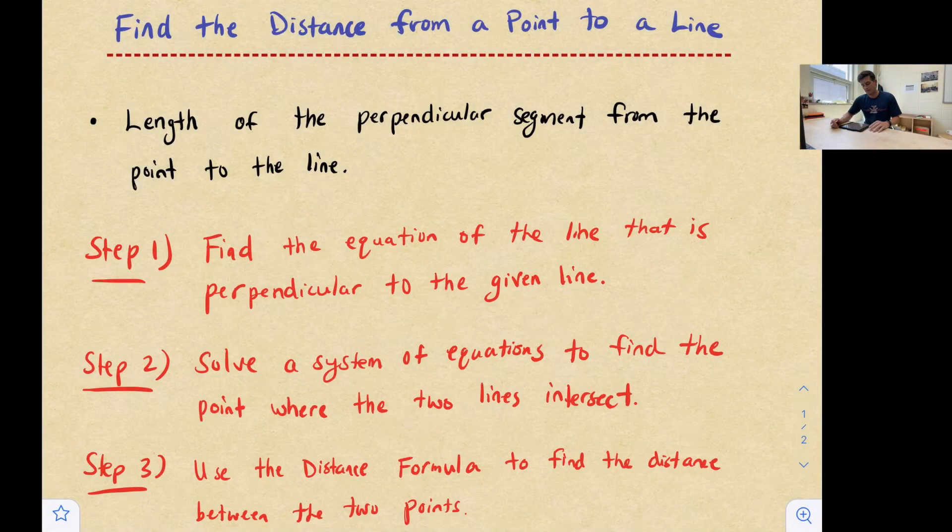Hello, everyone. In this video, we're going to look at how to find the distance from a point to a line. So in order to do this, we need to find the length of the perpendicular segment from the point to the line. The perpendicular segment from the point to the line is going to be the shortest distance from the point to the line.